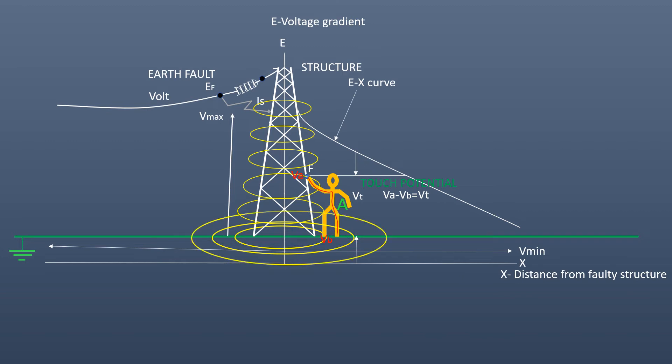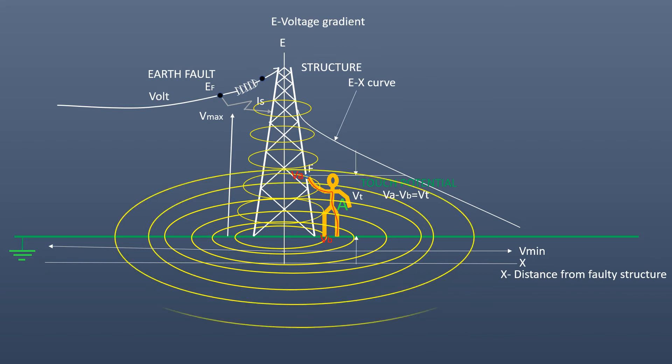Similarly, potential gradient along the surface of the floor surrounding the fault structure is also developed. A person is standing here where his right leg on a distributed potential circle of potential Vx and left leg on Vy potential circle. So, potential difference is Vx minus Vy which causes a flow of current through his body and the person will feel a shock. This is due to step potential, Vx minus Vy is equal to Vs, the step potential.